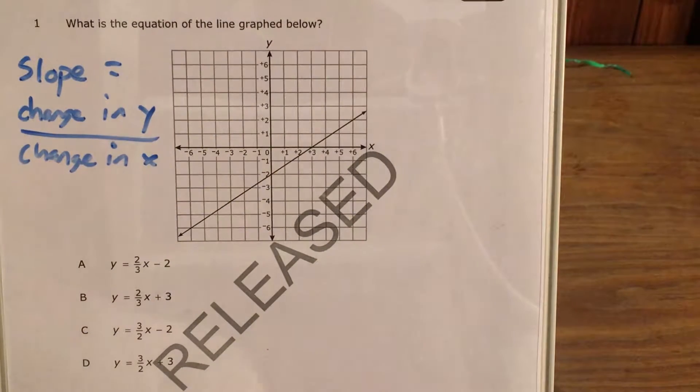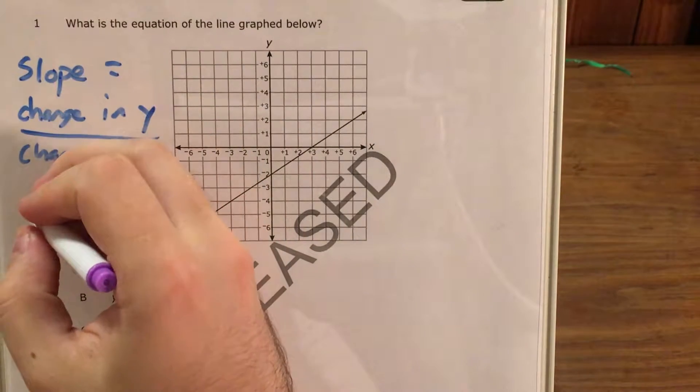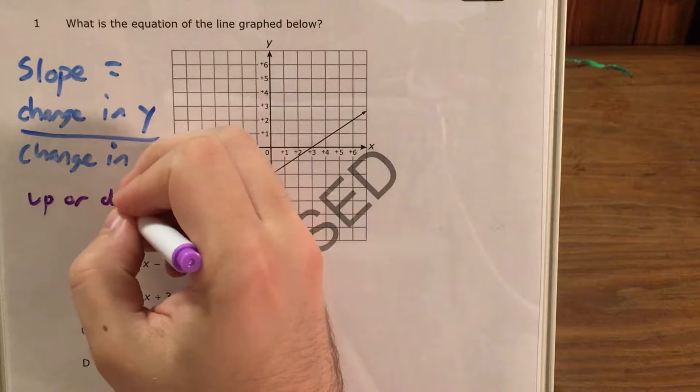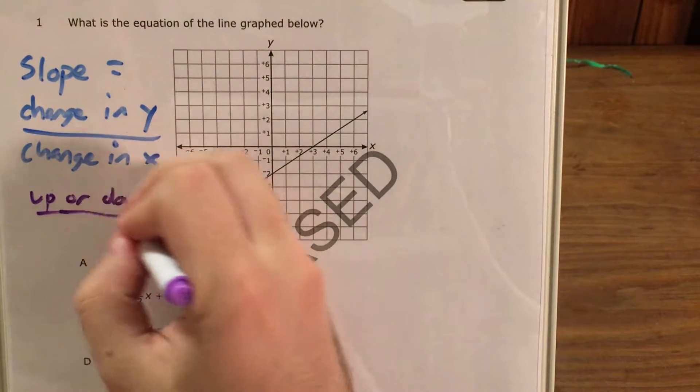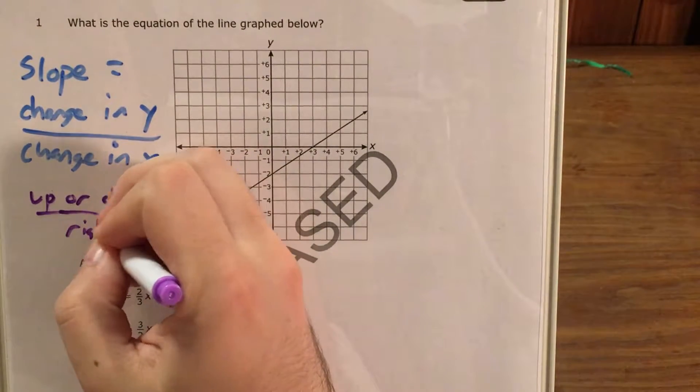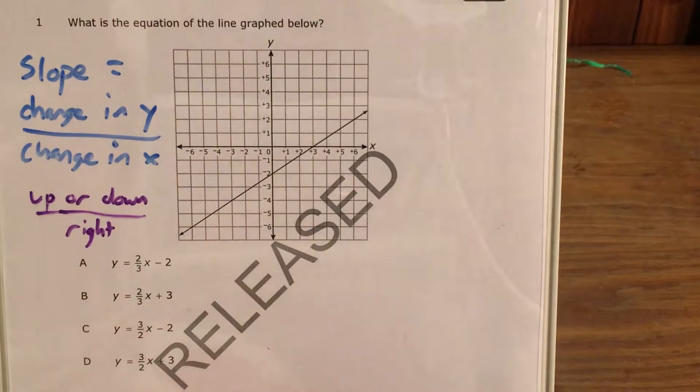I personally like to think of this, if I'm just looking at a graph, as a fraction or ratio where we have how far up or down we're going in the numerator and how far right we're going in the denominator.